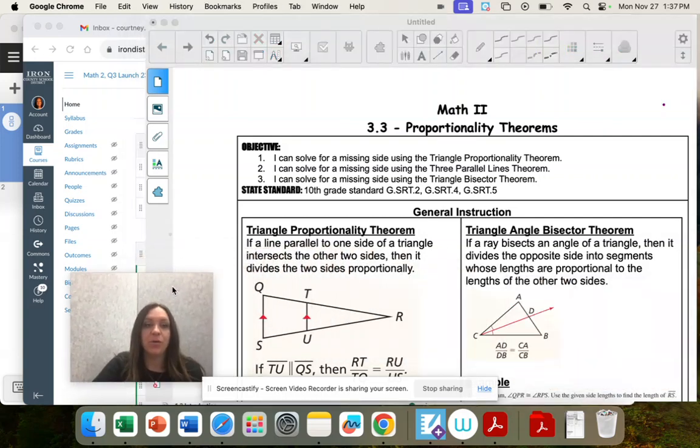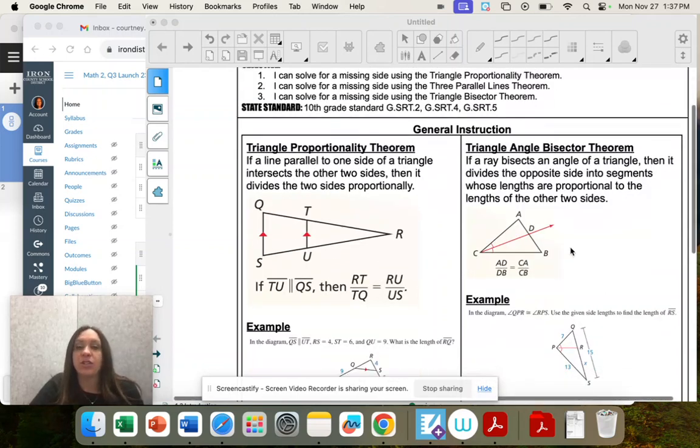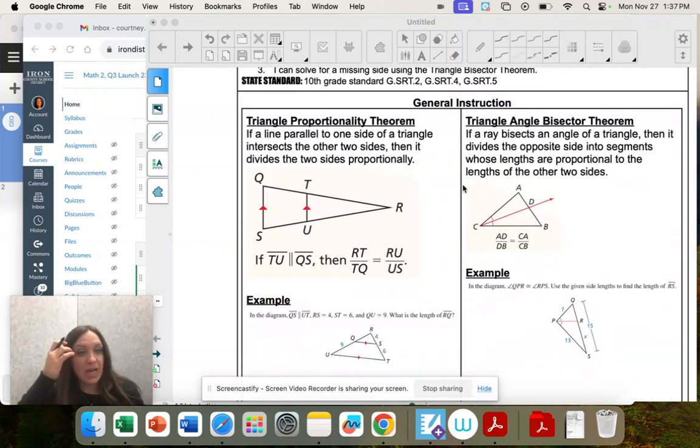3.3, we're looking at proportionality theorems. We get these proportions when we cut things in half or when we have parallel lines.